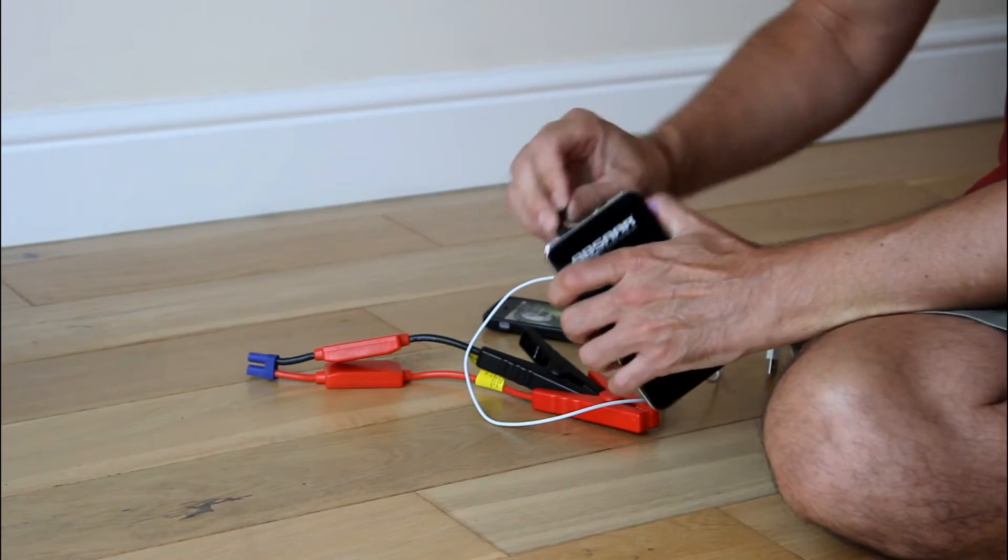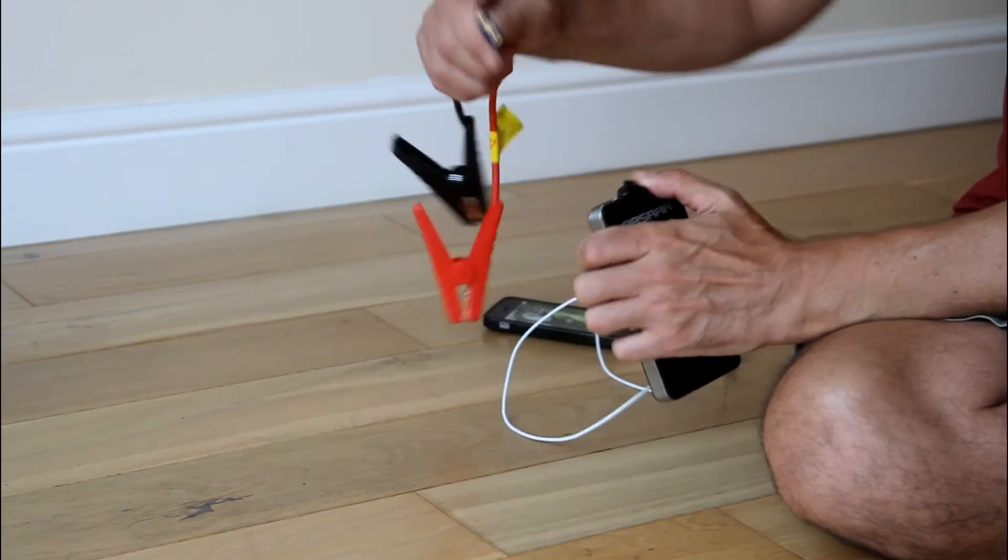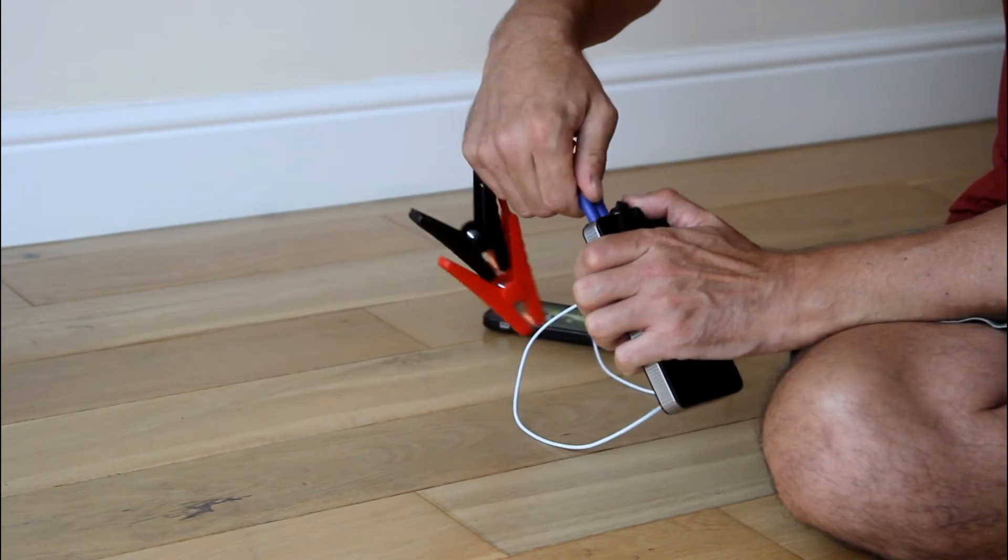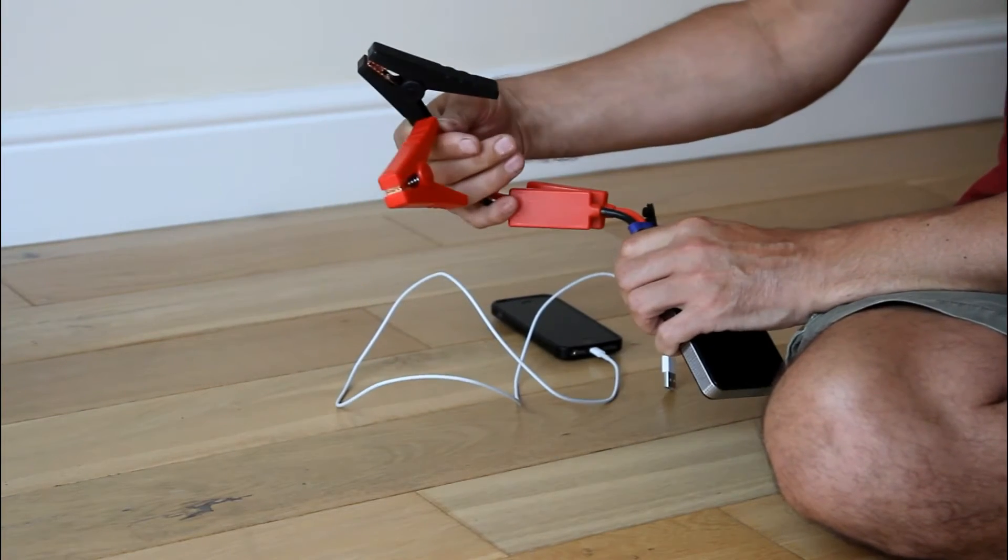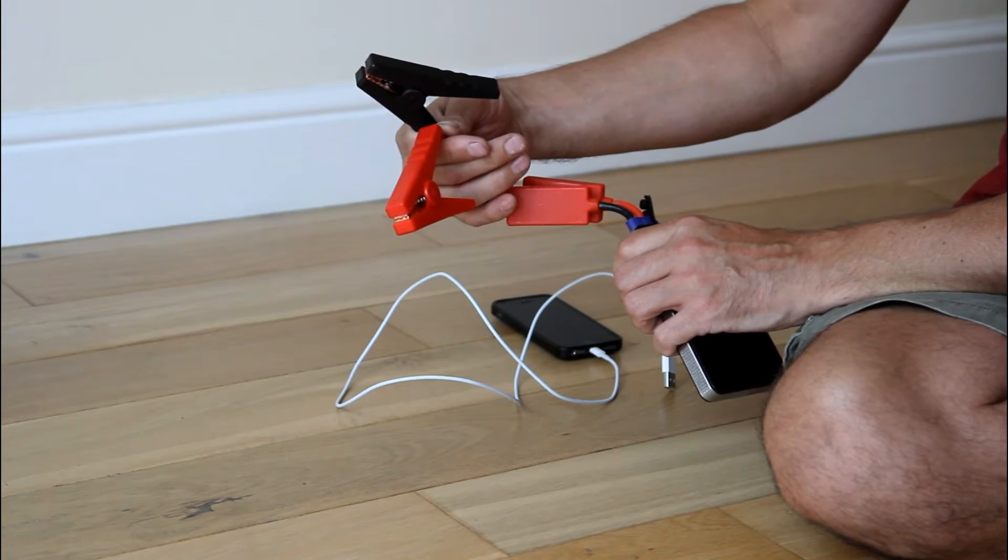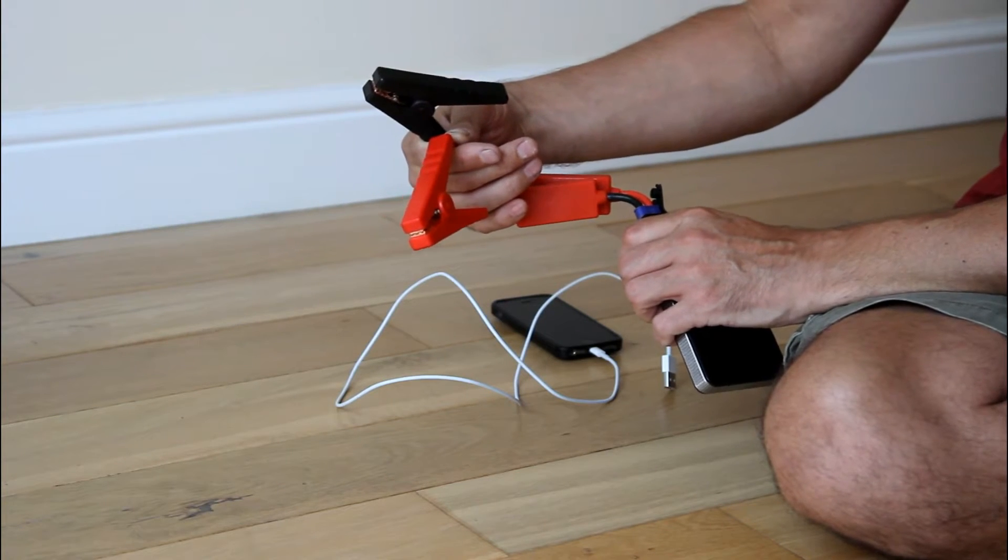The other thing it's got is a set of jump leads. Keep the jump leads in and we'll show you in a minute that it can jump start a Vespa GTS from a flat battery very easily.